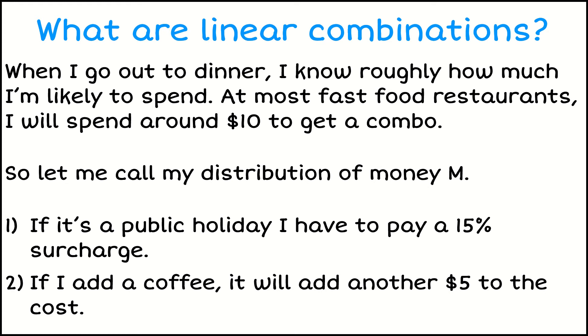When I go out to dinner, I know roughly how much I'm likely to spend. At most fast food restaurants, I'll spend around $10 to get a combo - chips, burger, drink, that kind of thing. I'm going to call that distribution of money M. That's the amount of money for one meal.